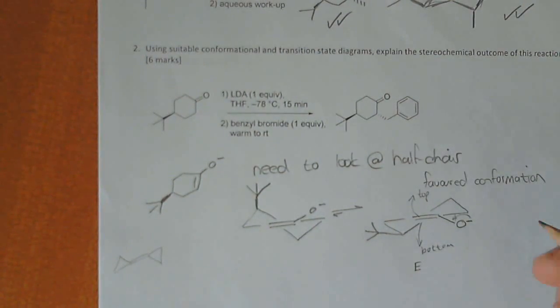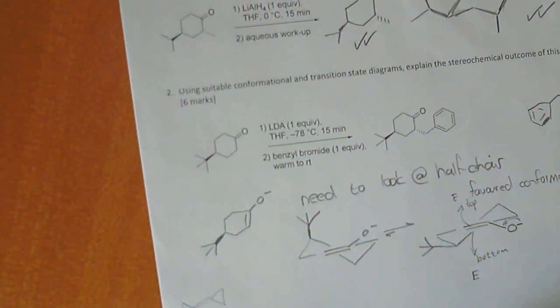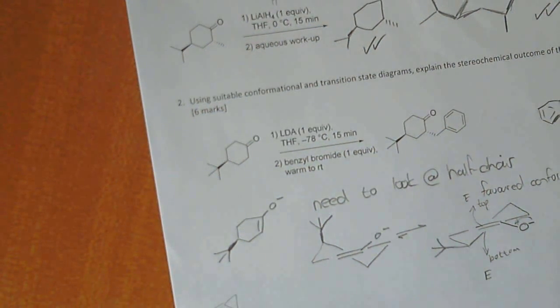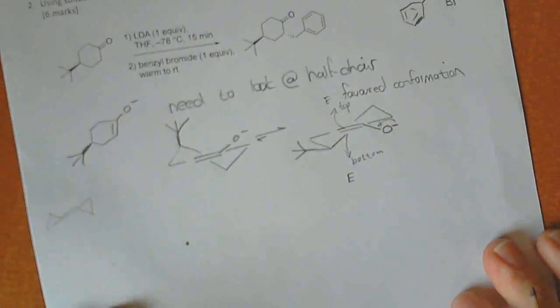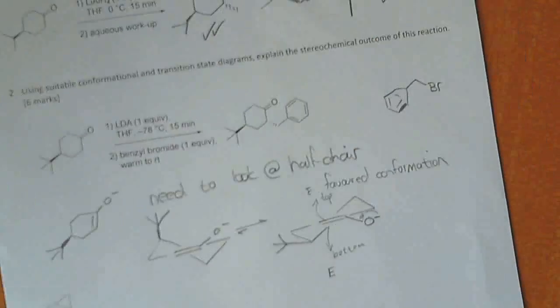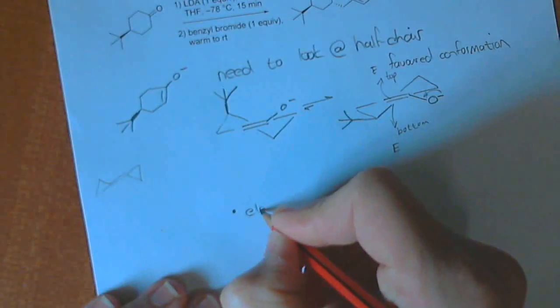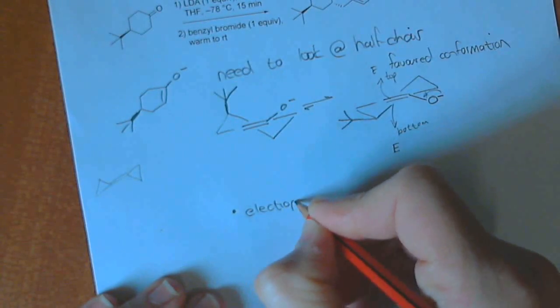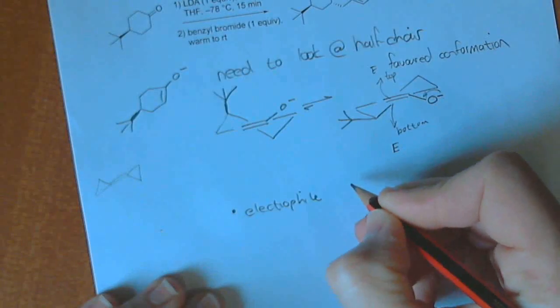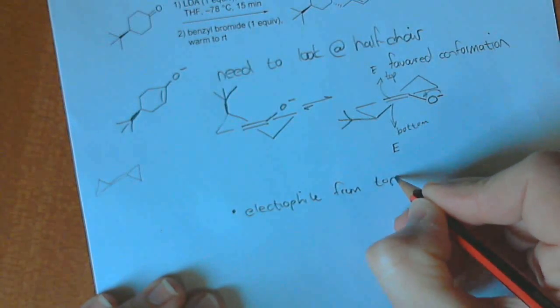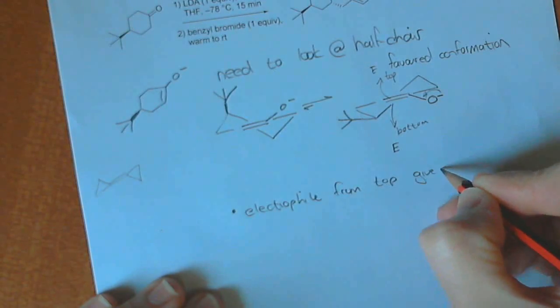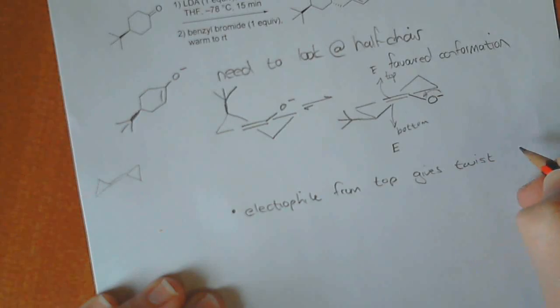The electrophile, I'll just write as an E. The electrophile, of course, is benzyl bromide, which some of you did get this wrong, but benzyl bromide looks like that. And over here, you can now write that electrophile from top gives twist boat.